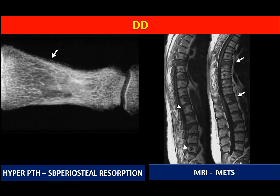Differential diagnoses of osteoporosis include multiple metastatic lesions causing multilevel wedge fractures, which are distinguished by altered signal intensity lesions on MRI. Hyperparathyroidism also shows diffuse osteoporosis but can be identified by subperiosteal resorption — visible as black areas between cortical lines on imaging. These are the key imaging features used to differentiate osteoporosis from its mimics.